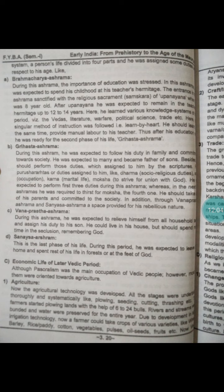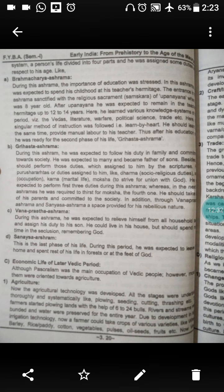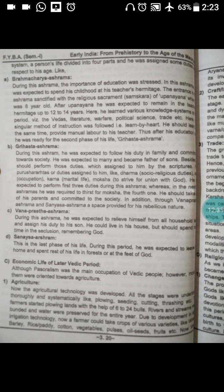Rivers and streams were bunded and waters were preserved for the entire year. Due to development in agro-irrigation technology, a farmer could now take crops of various variety — like wheat, barley, rice, cotton, vegetables, pulses, fruits, etc.